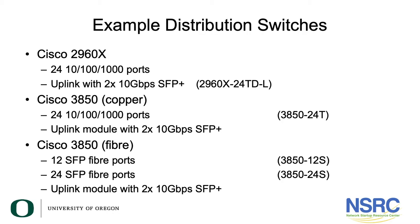The nice thing with the 3850 is there are also some fiber options. The 12-port SFP fiber and the 24-port SFP fiber could be options as a distribution switch for the campus, connecting by fiber to the edge, and then you have the 10 gig uplink ports and an extension module to let you connect to the core.